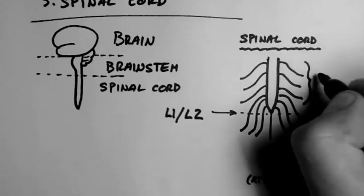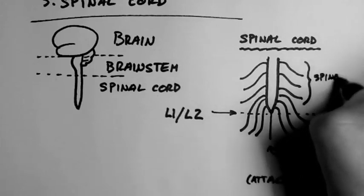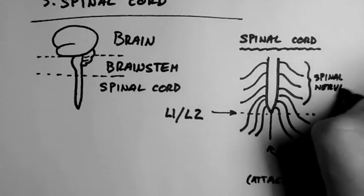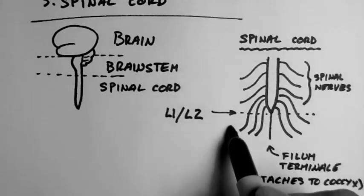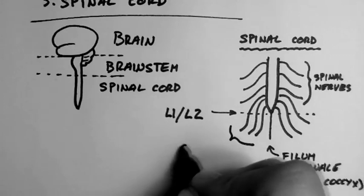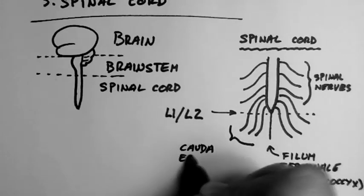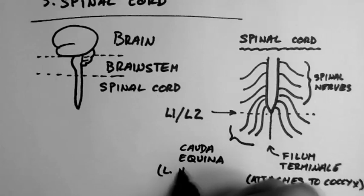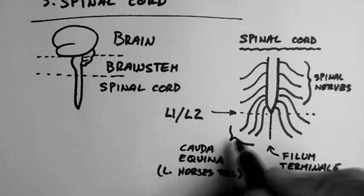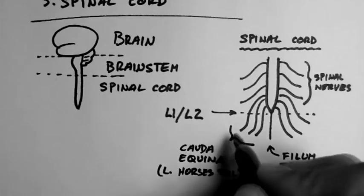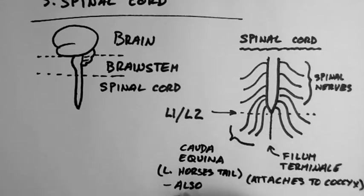Coming from the sides of the spinal cord are spinal nerves. Down here we have the cauda equina, which is Latin for the horse's tail. And they're also spinal nerves, but they hang down below the level of L1 and L2.